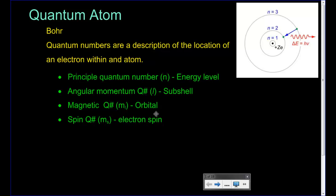Last but not least, we have quantum spin — electrons actually spin in opposite directions when they're in an orbital together. These quantum numbers are simply a zip code for the location of an electron.